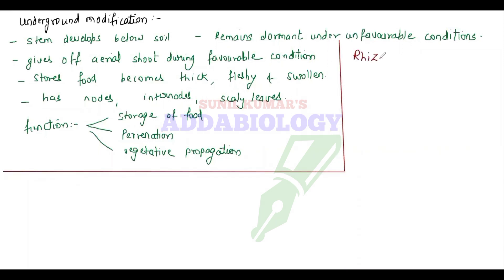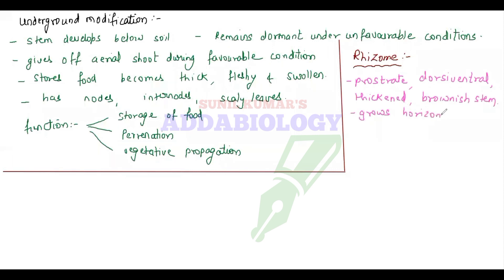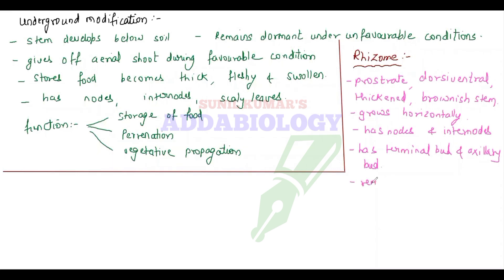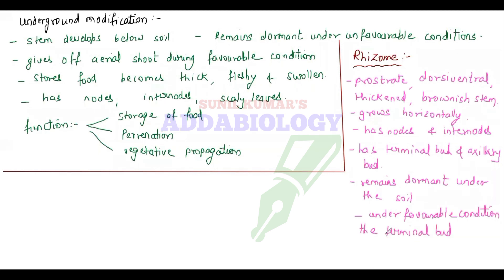The first example is rhizome. Rhizome is prostrate, runs parallel to the earth's surface — a dorsiventral, thickened, brownish stem that grows horizontally with nodes and internodes. It runs parallel to the soil surface below the soil. It has terminal bud and axillary bud which remain dormant under the soil. Under favorable conditions, the terminal bud grows into an aerial shoot and finally dies at the end of the favorable condition.